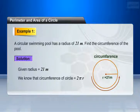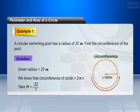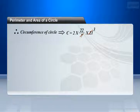As we know that circumference of the circle is equal to 2πR. Take π equals 22/7. Therefore, circumference of circle C equals 2 × 22/7 × 21.